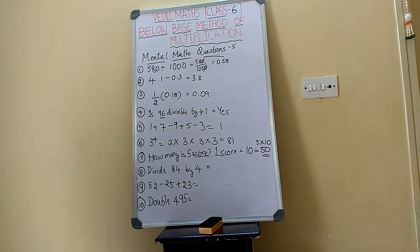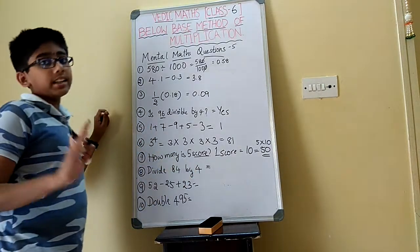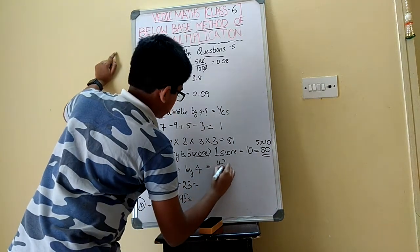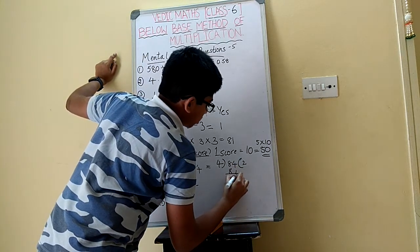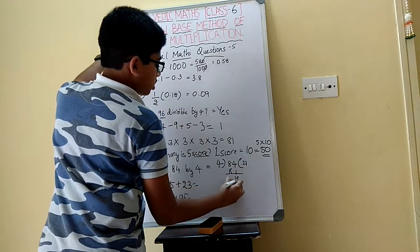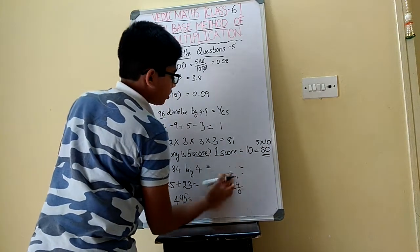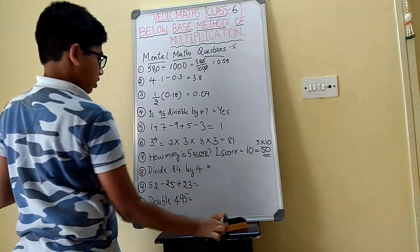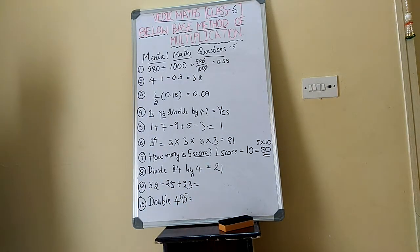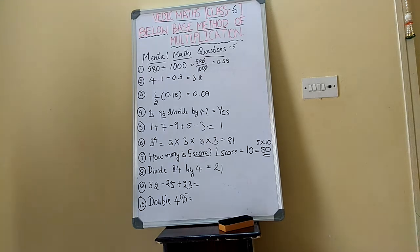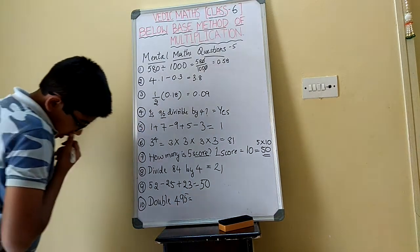Next: is 84 divisible by 4? We need to divide it and find the answer. Do the division: 4 twos is 8, bring down 4, 4 ones is 4, therefore our answer is 21. Write 21. Next: 52 minus 25 plus 23 is going to be 50.